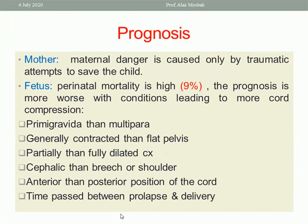What about the prognosis? As regards the mother, maternal danger is caused only by a traumatic attempt to save the child. As regards the fetus, perinatal mortality reaches up to 9%. The prognosis is worse with conditions leading to more cord compression, such as primigravida versus multipara, and generally contracted or flat pelvis.